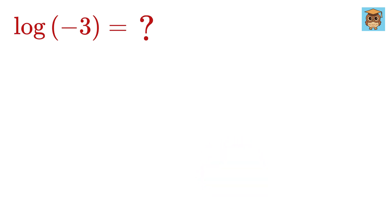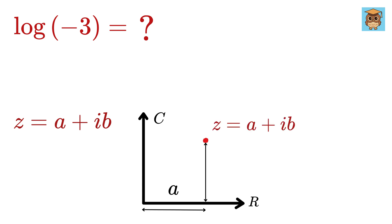Okay, so let us see how we can solve for log of negative 3. Now consider this z value as a plus ib, which is a standard way of writing complex numbers. Now draw this graph where the x-axis is real numbers and y-axis represents complex numbers. And if this is the origin, then this point represents z with this as a and this as b.